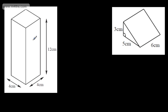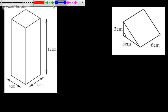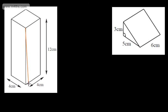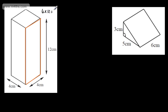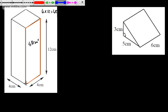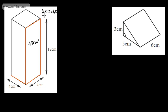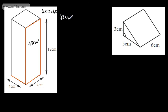Let's look at another example. This is another cuboid. We've got the length of 12 and the width of 4. So the area of the cross-section is going to be 4 times 12, which gives me 48, so the area of this face is 48 cm squared. All I need to do to find the volume is multiply it by this length here. So we're going to have 48 times 4, which gives us 192. So our answer is 192 cm cubed.